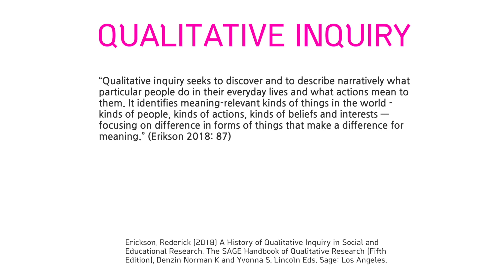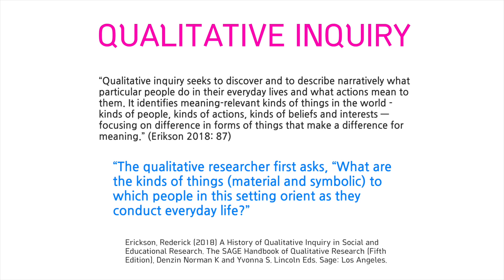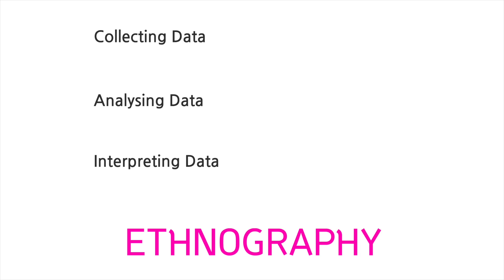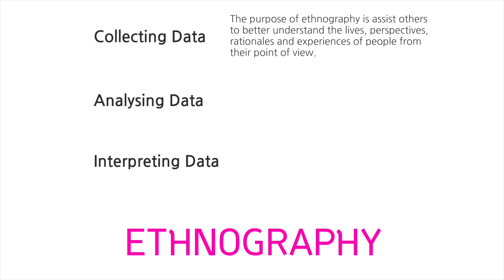Qualitative research is about the telling of stories of different kinds of people and different kinds of things. The qualitative researcher first asks: what are the kinds of things, material and symbolic, to which people in this setting orient as they conduct everyday life? Ethnography, as a form of qualitative research, involves a set of processes for collecting data, processes for analysing data, and theories and paradigms for interpreting data. The purpose of ethnography is to assist others to better understand the lives, perspectives, rationales, and experiences of people and objects from their point of view.